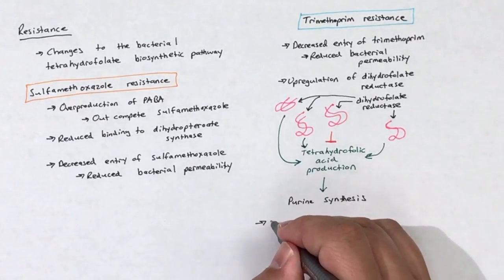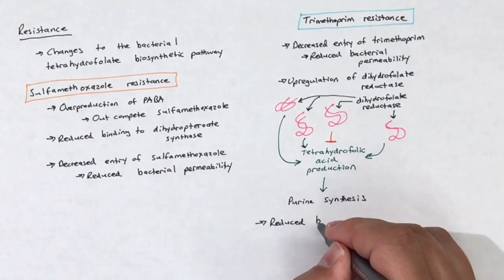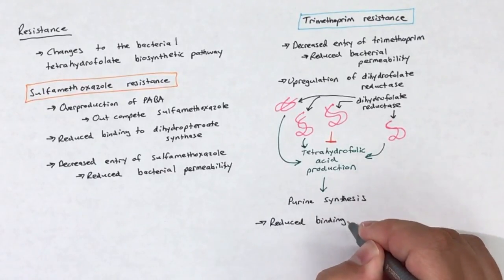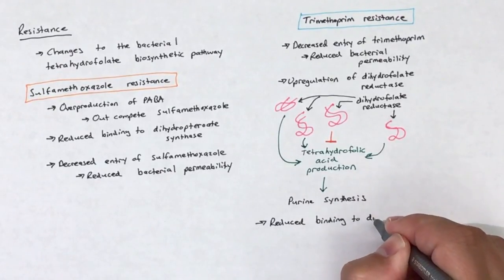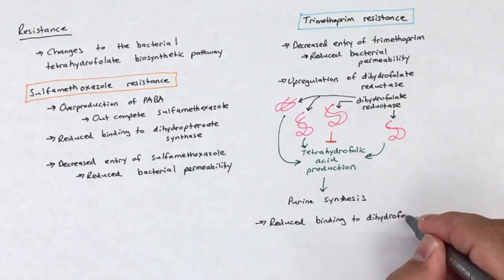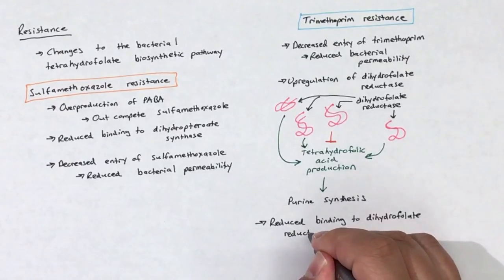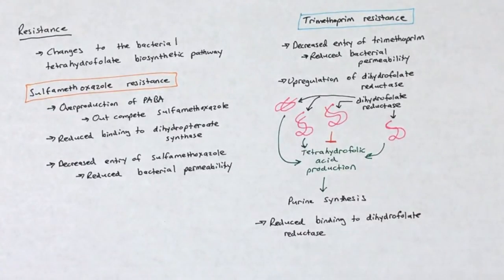Lastly, and similarly to sulfamethoxazole, a resistant bacterial strain can upregulate a mutated dihydrofolate reductase with reduced binding affinity for trimethoprim. Reduced binding of trimethoprim to dihydrofolate reductase will allow the enzyme to function normally and will allow for the antibacterial action of trimethoprim to be diminished.